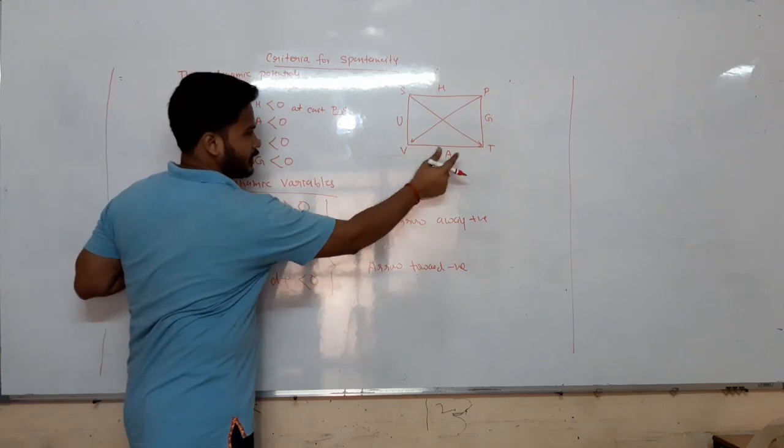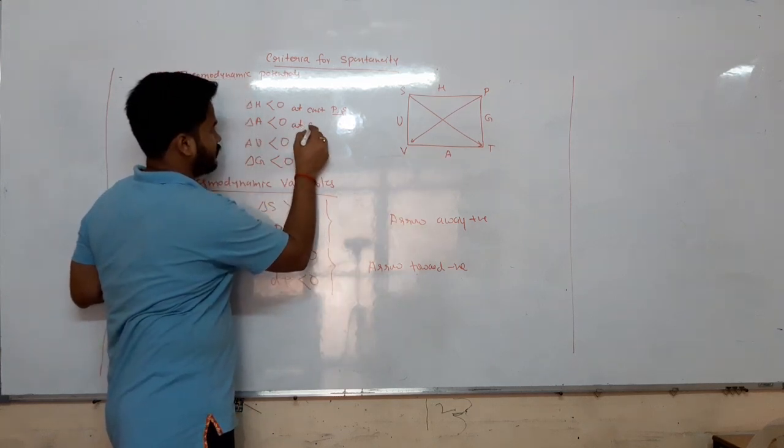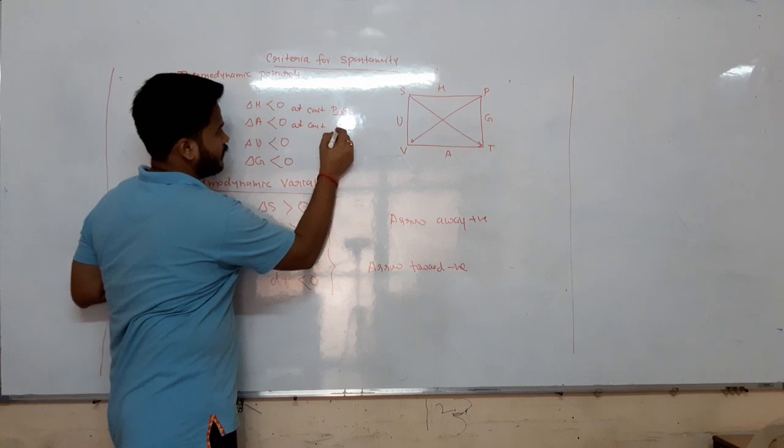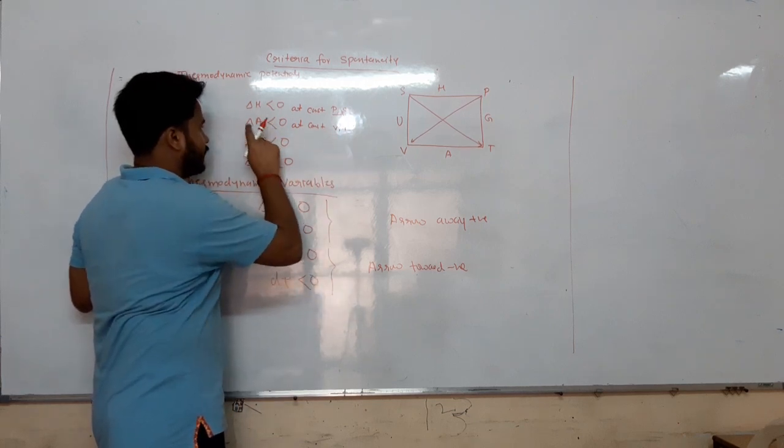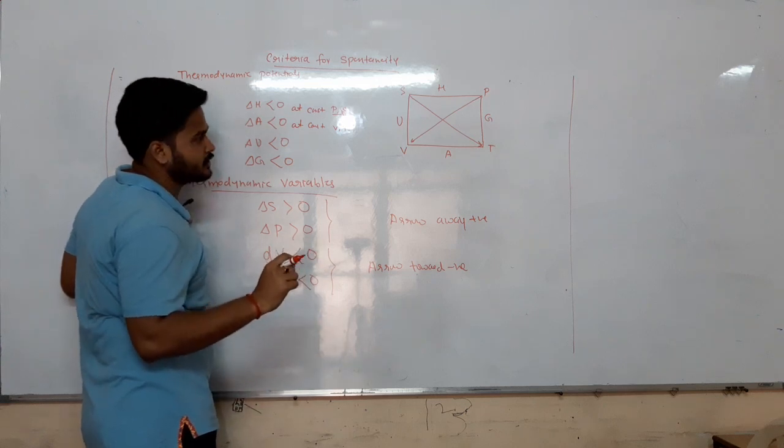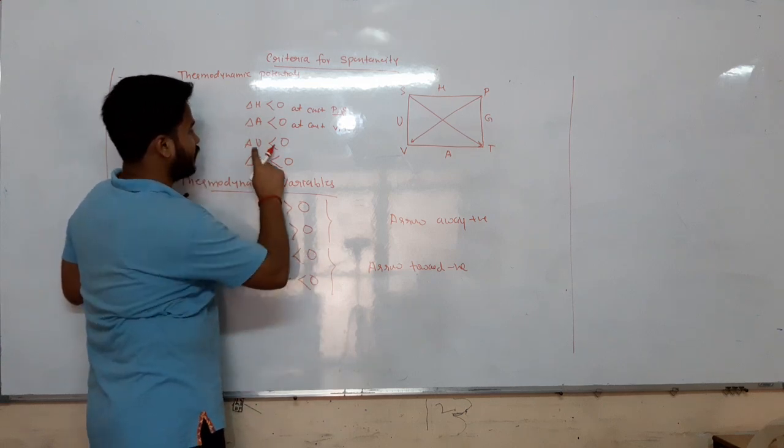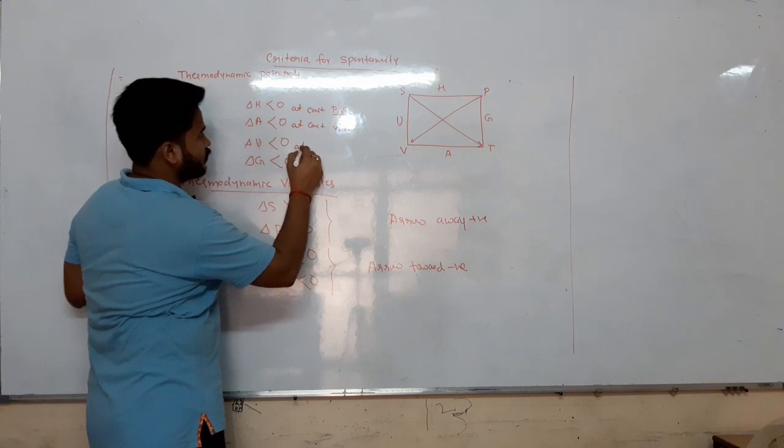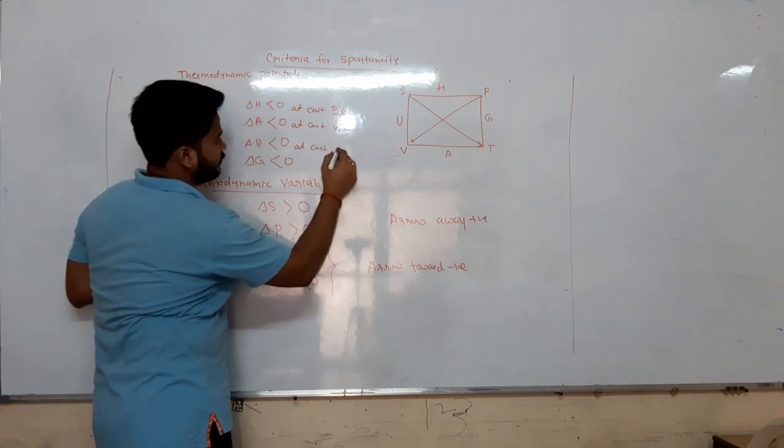At constant V and T, you will get delta X for spontaneity. If the system happens to be spontaneous, delta X equals 0 at equilibrium. This is the shortcut you have to get for exams. If you talk about constant S and V.